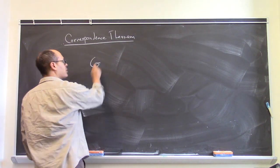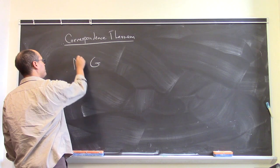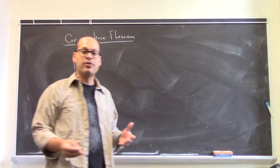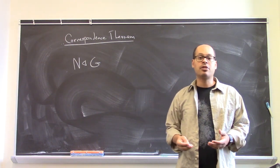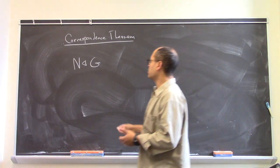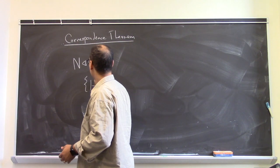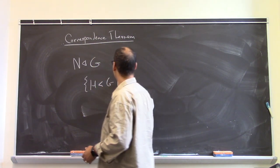Well, if you're given a group G and a normal subgroup N, then the correspondence theorem says there's a bijective correspondence between subgroups of G which contain N and subgroups of the quotient group G mod N.